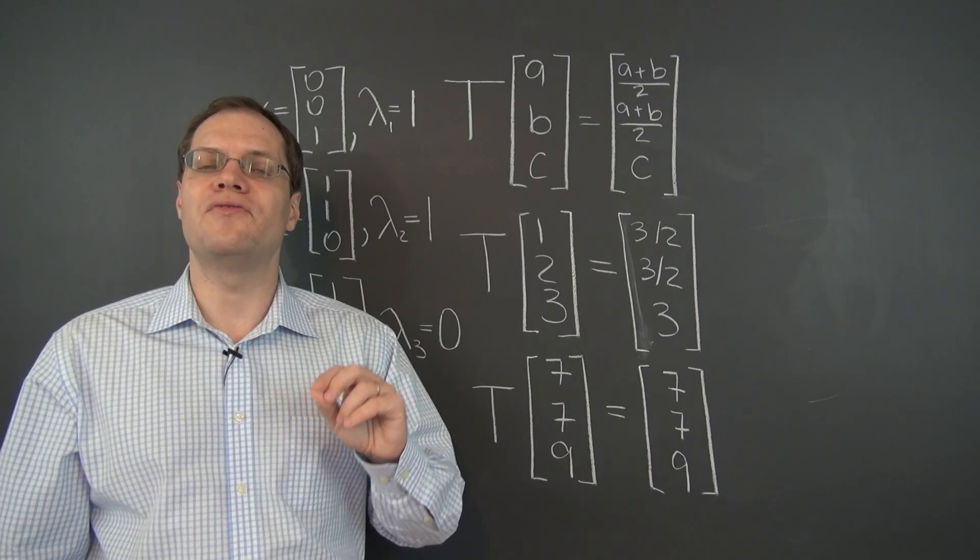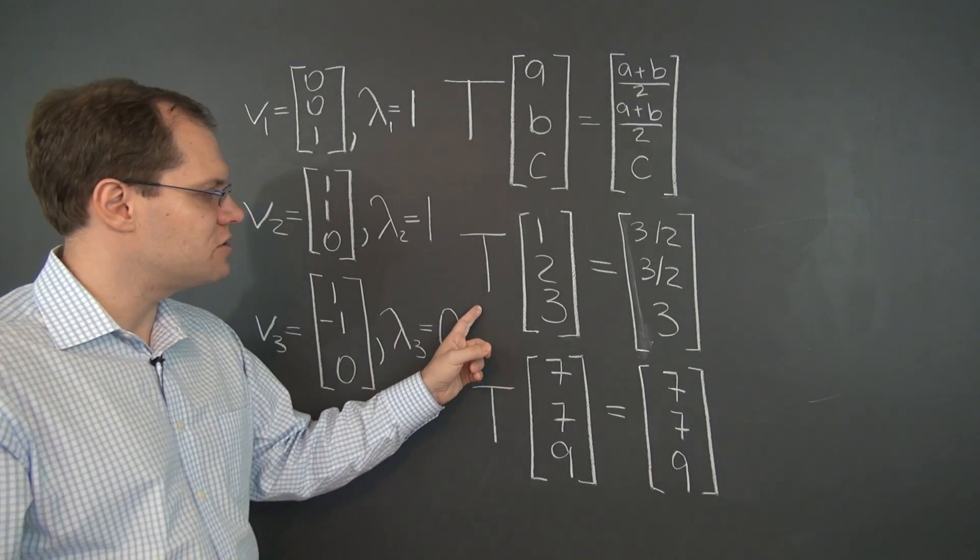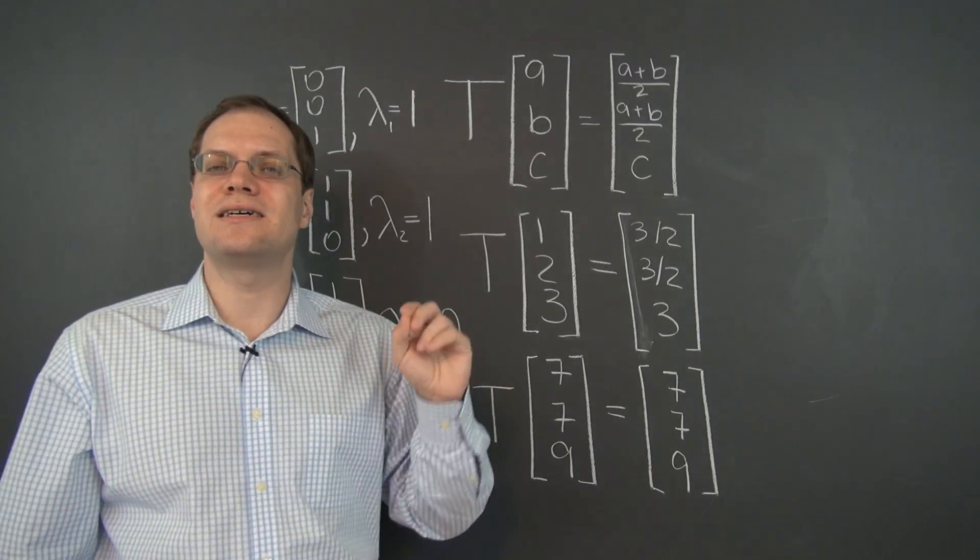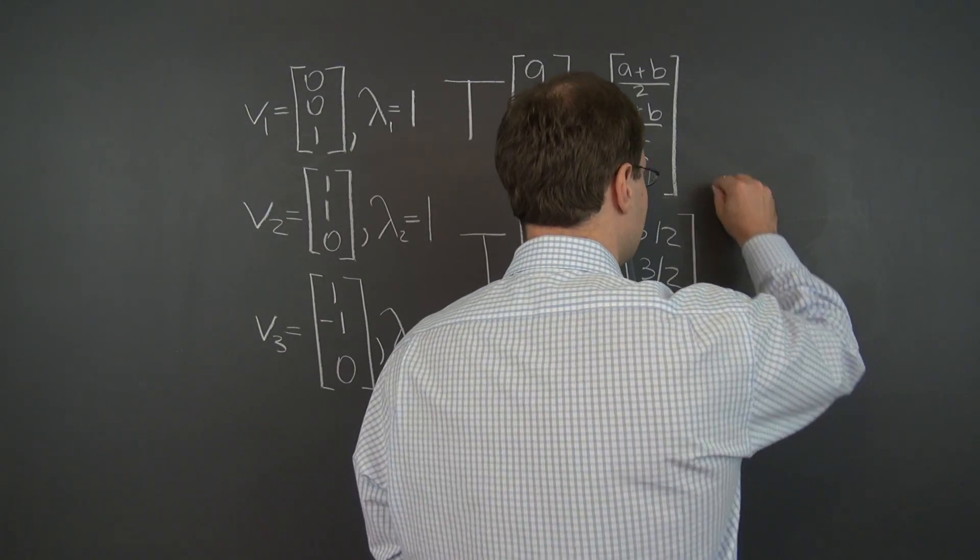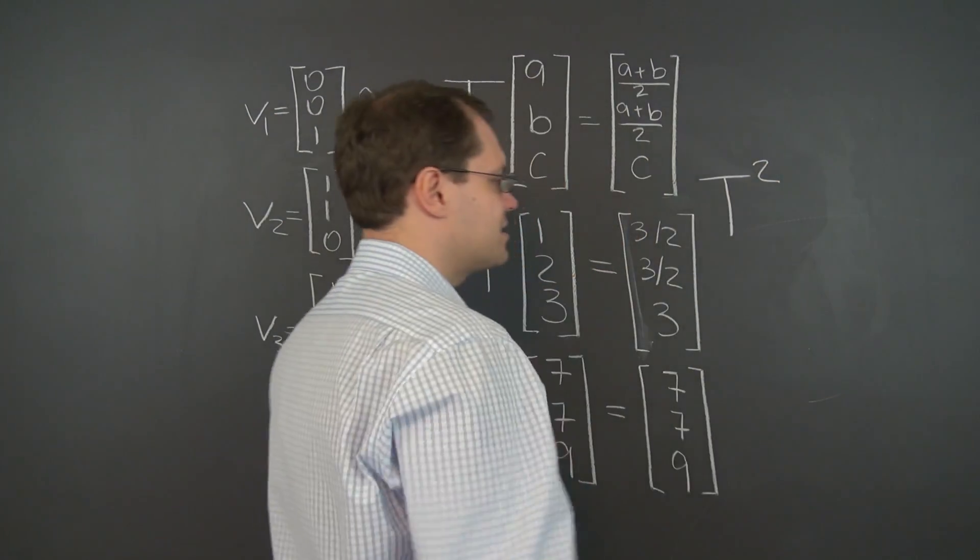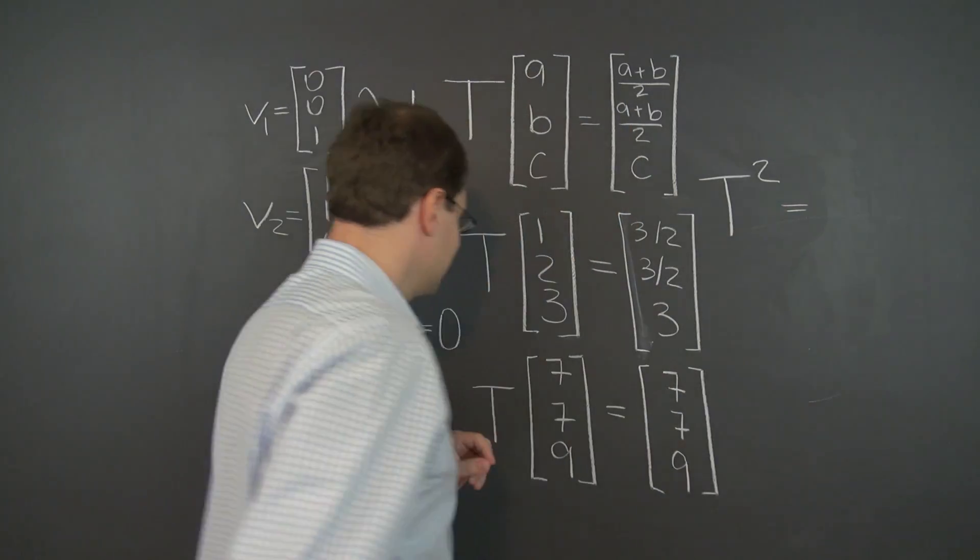And that question is, what will happen if we apply this transformation to a vector twice consecutively? So what is T squared? That's the question.